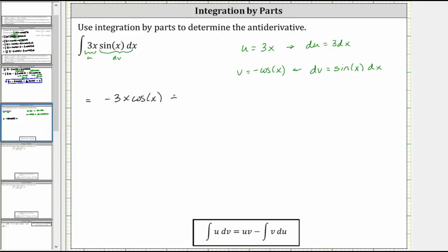So because v is equal to negative cos(x), this becomes plus, let's factor out the 3, and we have the integral of cos(x) dx.